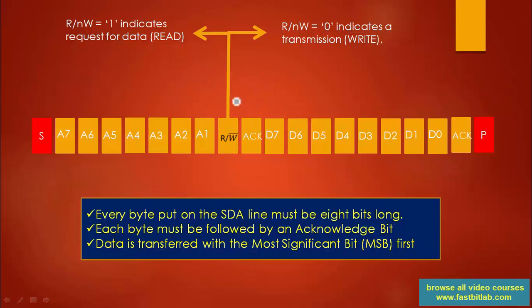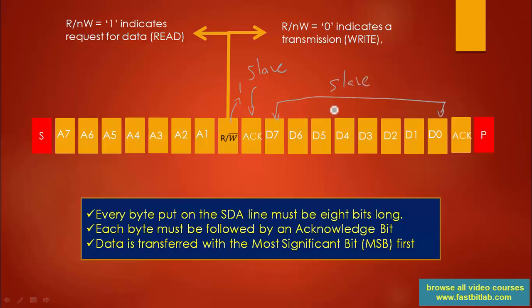Now let's consider the R/W bit as 1. If this bit is 1, it means that the master is going to read the data from the slave. After the ACK received by the slave, the data is now sent by the slave to the master, and this ACK is now given by the master — master ACKs that data. If master thinks that it has got sufficient data, then master can generate the stop condition, where the bus will be released.